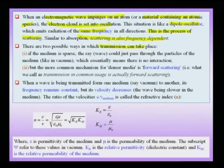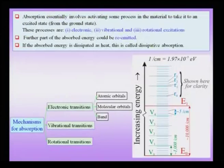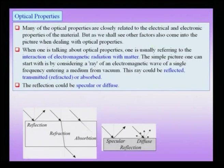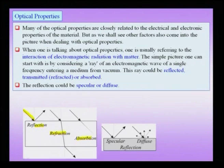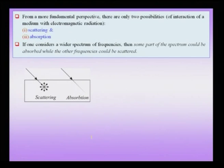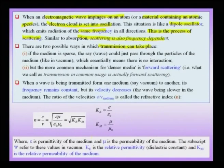There are two possible ways in which transmission can take place. We earlier pointed out three possibilities when light falls on a medium: one is reflection, another is refraction, and the third is absorption. When talking about refraction, we essentially assume the ray is going into the second medium, which we otherwise call transmission.